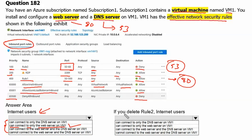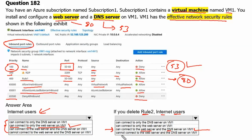Now question 2: if you delete Rule 2, what can internet users connect to? If we delete Rule 2, port 53 will be allowed, and therefore users will be able to connect to both the web server and the DNS server on the virtual machine. Therefore Option 3 will be the correct answer.